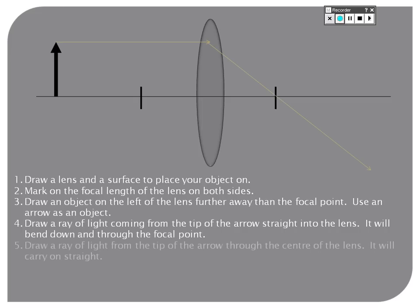We're interested in a second ray of light. A second ray of light comes from the tip of the object and goes straight through the lens. Because it's hitting the centre of the lens, it goes straight through. It doesn't get bent at all.